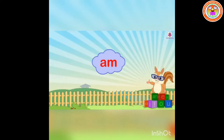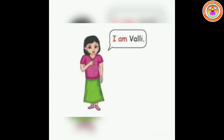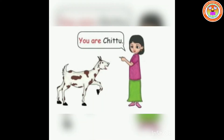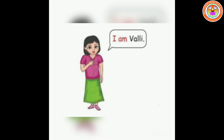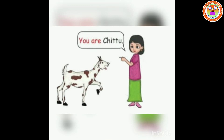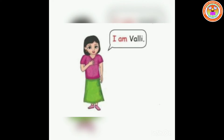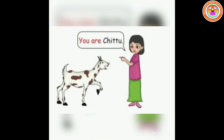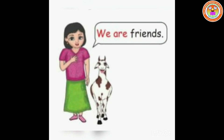Let us see some examples. We can see the same sentence used for 'am' and 'are': 'I am Vali' and 'You are Chittu.' When Vali is telling about herself she uses 'am', and when she is telling about Chittu she uses 'are'. I will explain once again: 'I am Vali' — she is telling about herself so she uses 'am'. 'You are Chittu' — she is telling about Chittu so she uses 'are'.